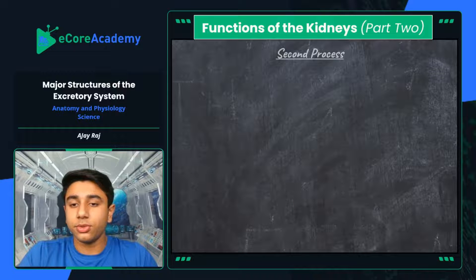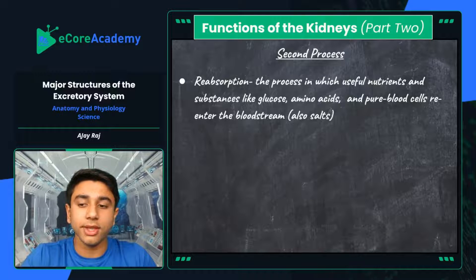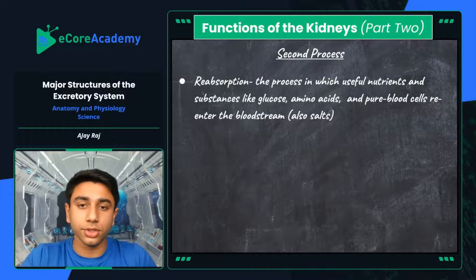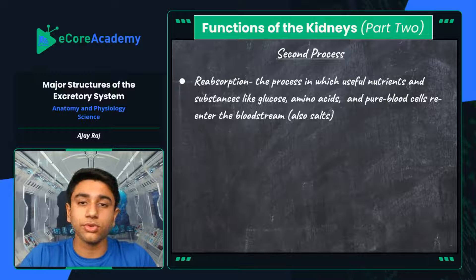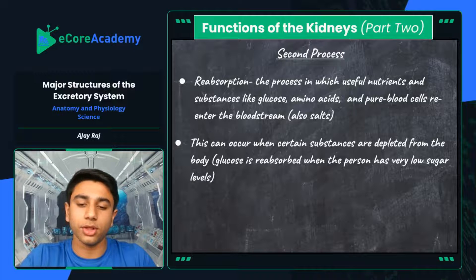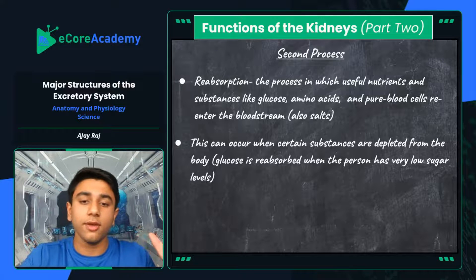Moving on to the functions of the kidneys part two — the second process is reabsorption. This is the process in which useful nutrients and substances like glucose (essentially sugar), amino acids (your proteins), pure blood cells (clean blood), and salts reenter the bloodstream. When the body is depleted of essential nutrients, it needs to reabsorb certain nutrients before they're accidentally excreted. For example, glucose is reabsorbed when the person has very low sugar levels. After filtering blood and separating it from toxins, the kidneys release the clean blood back into the bloodstream.